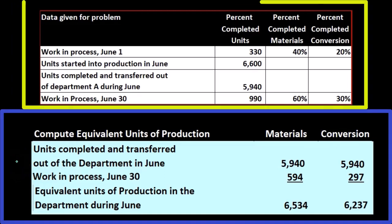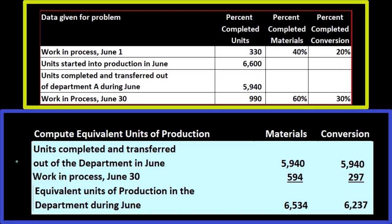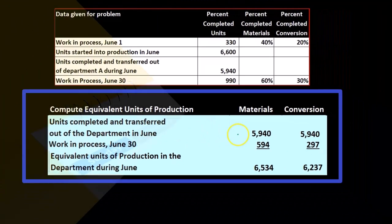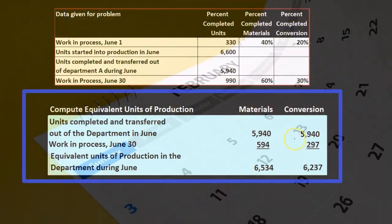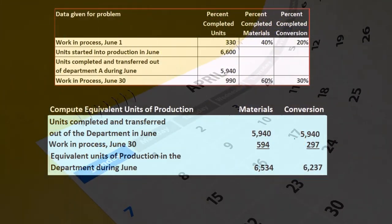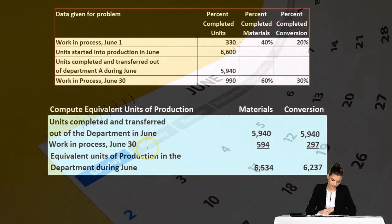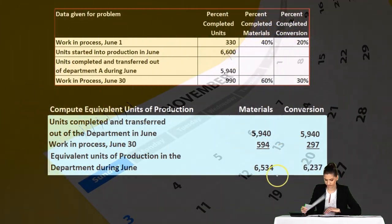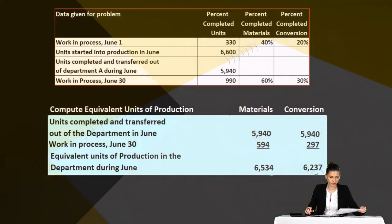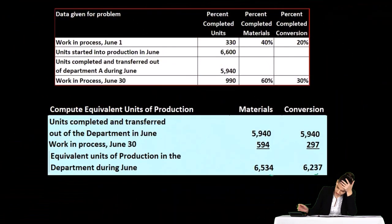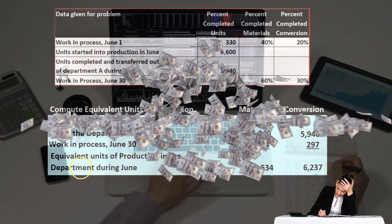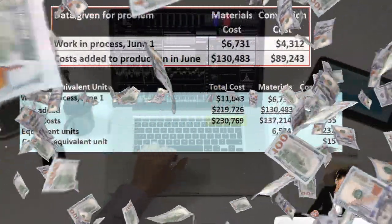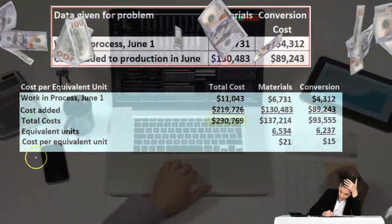Now we need to assign the dollar amount to those units. We have units completed and transferred out of the department in June — 5,940 for both materials and conversion — and then work in process for June being 5,940 and 297. These give us the total. We now need to get the dollar amount applied to them.